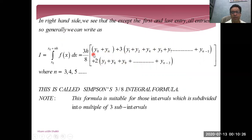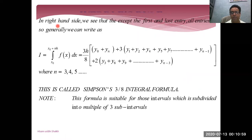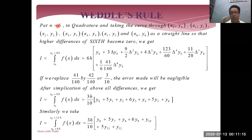This is called Simpson's 3/8 rule. The next one is Weddle's rule. When we put n equal to 6, you can derive Weddle's rule using the same pattern and process. So these are the complete formulas — four formulas. The trapezoidal rule is limited to linear functions; the one-third rule is limited to quadratic functions with even sub-intervals; the 3/8 rule is valid for cubic functions with sub-intervals as multiples of three; and Weddle's rule is valid for polynomial functions of sixth degree with sub-intervals as multiples of six.